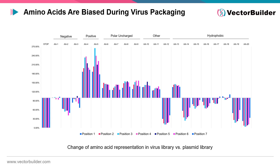The amino acids in their sequence can also have an impact on AAV packaging. As shown in this figure, hydrophobic and negatively charged amino acids tend to be less packageable than positive and polar uncharged amino acids. Altogether, this data indicates that VectorBuilder can produce diverse, homogeneous libraries capable of in vitro and in vivo screening to discover new variants.